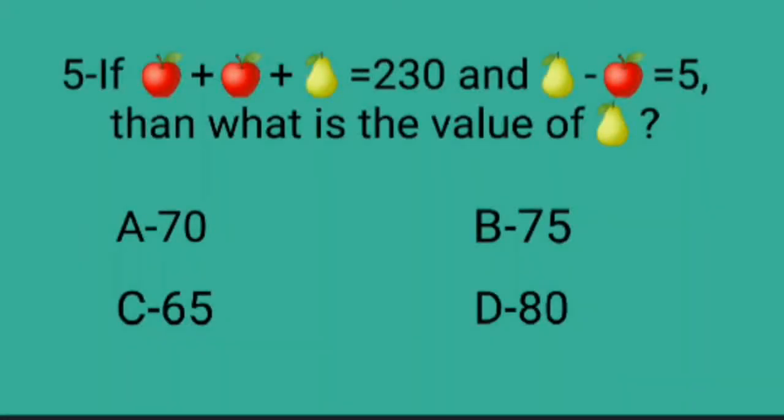Q5. If apple plus apple plus pear is equal to 230 and pear minus apple is equal to 5, then what is the value of pear? A. 70, B. 75, C. 65, D. 80.